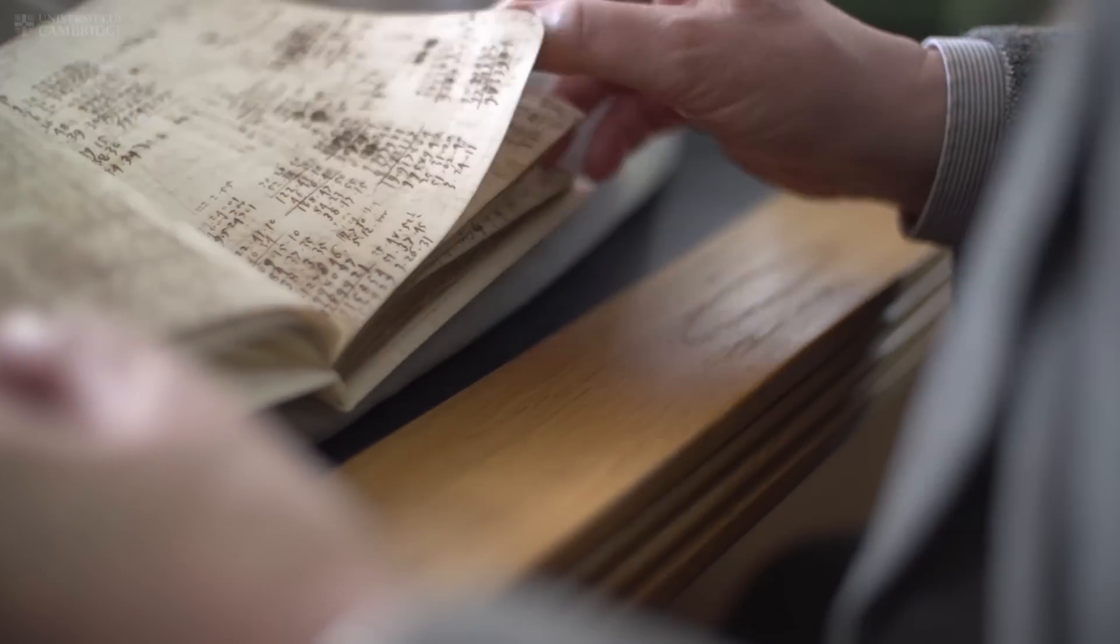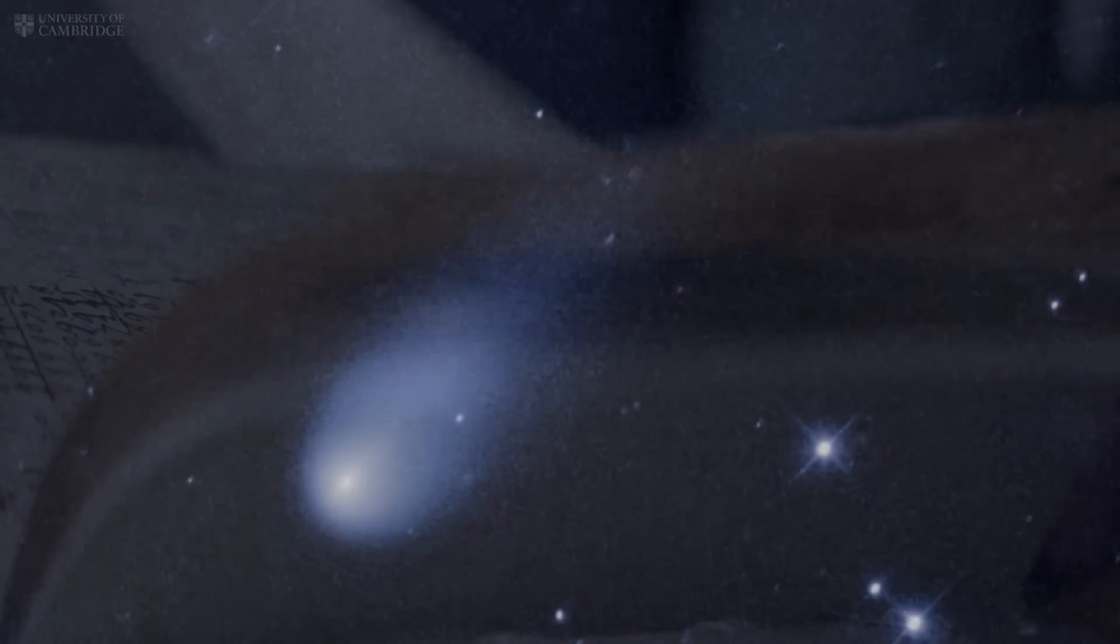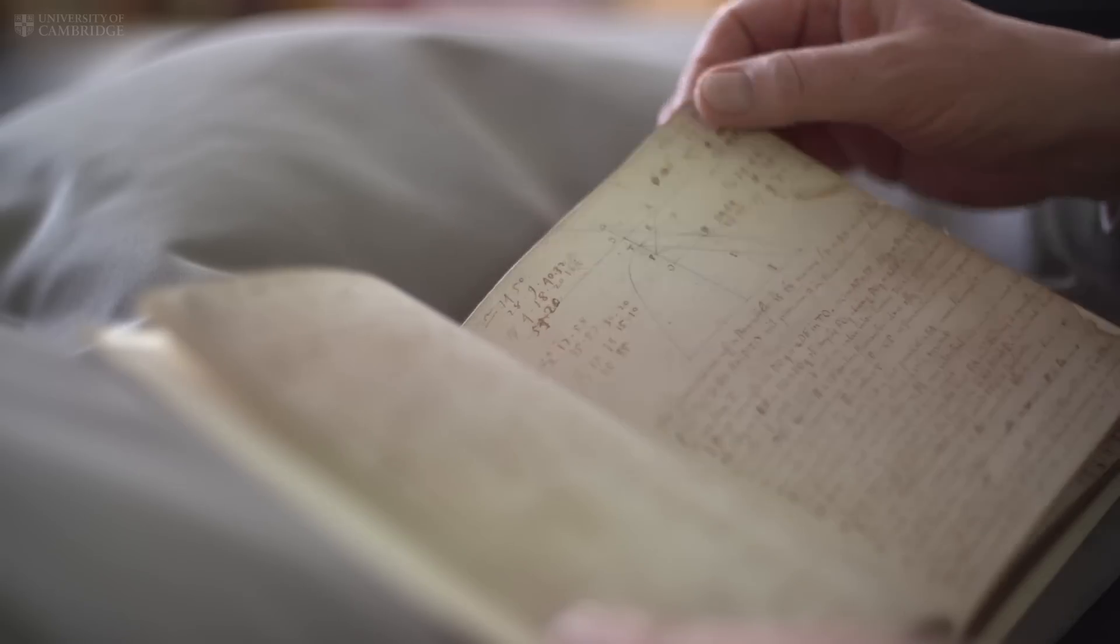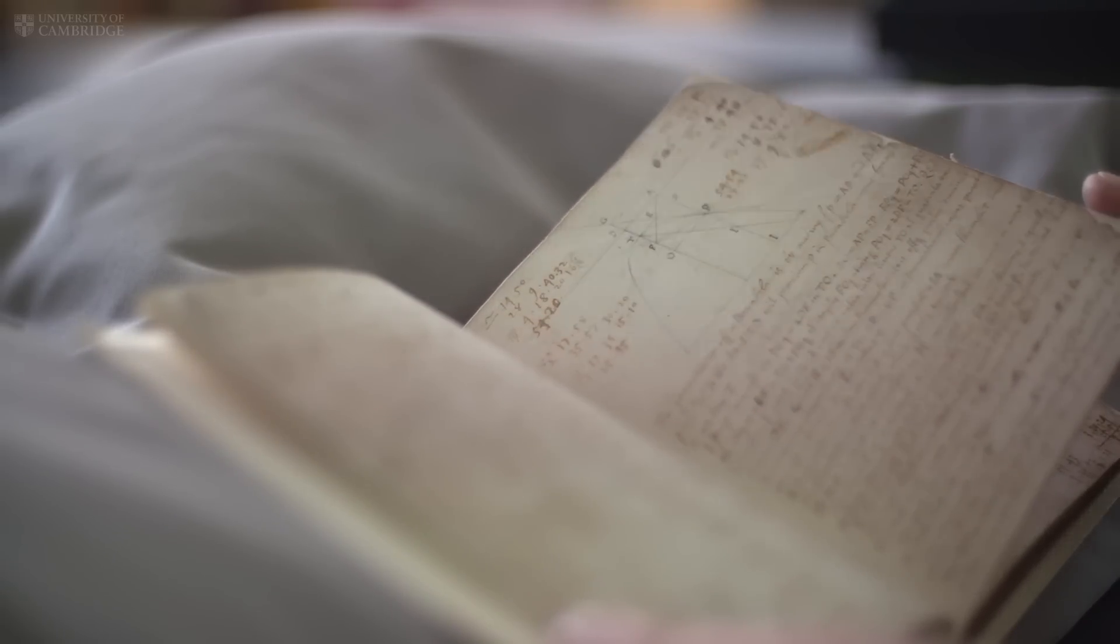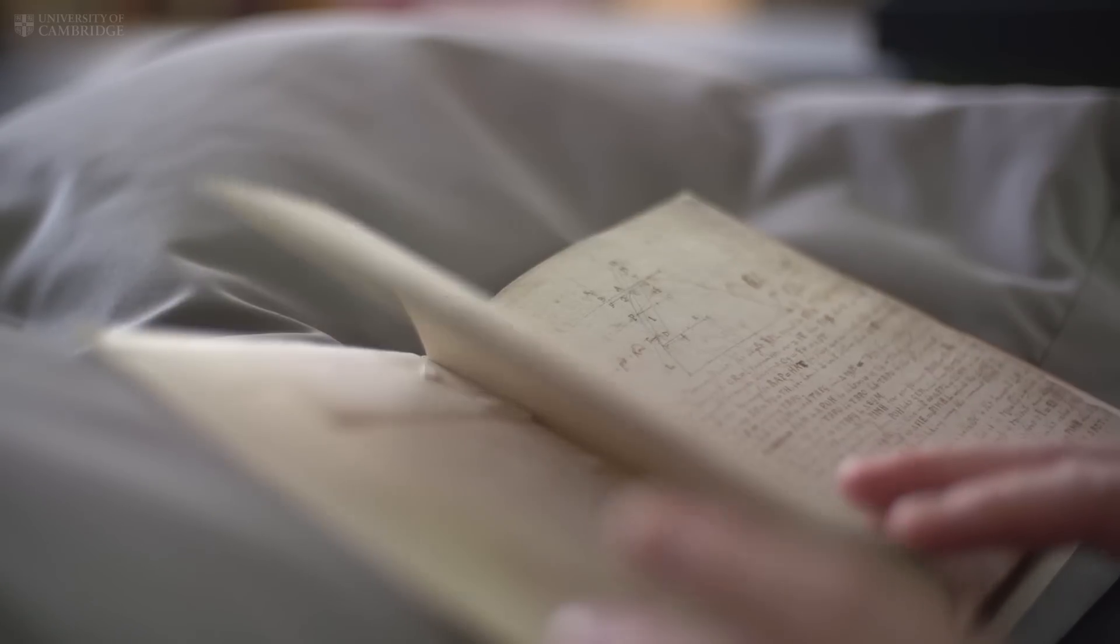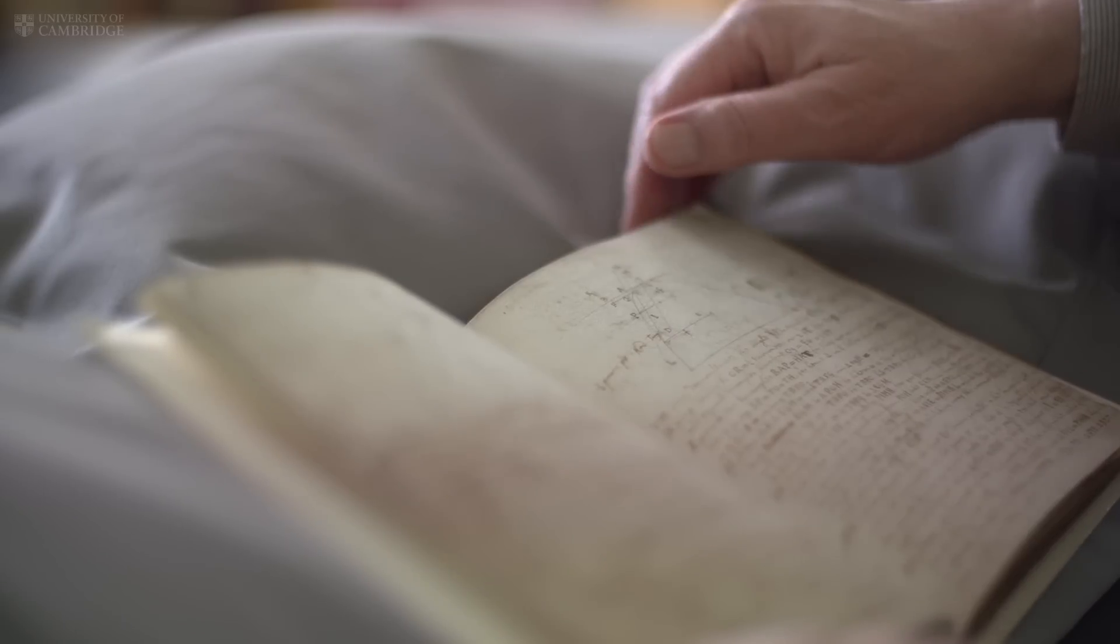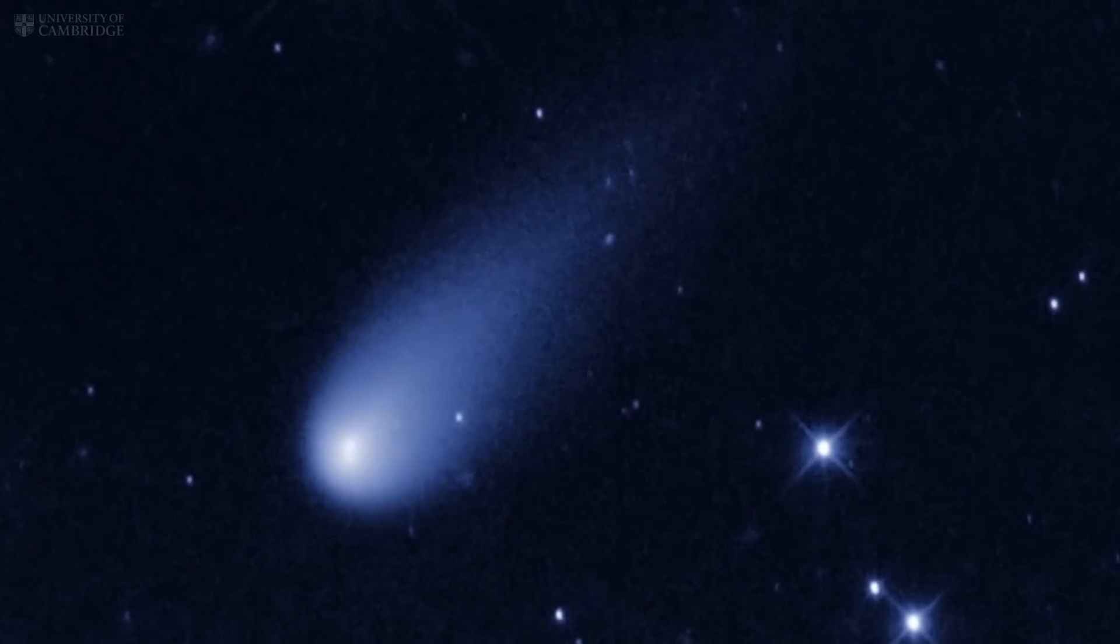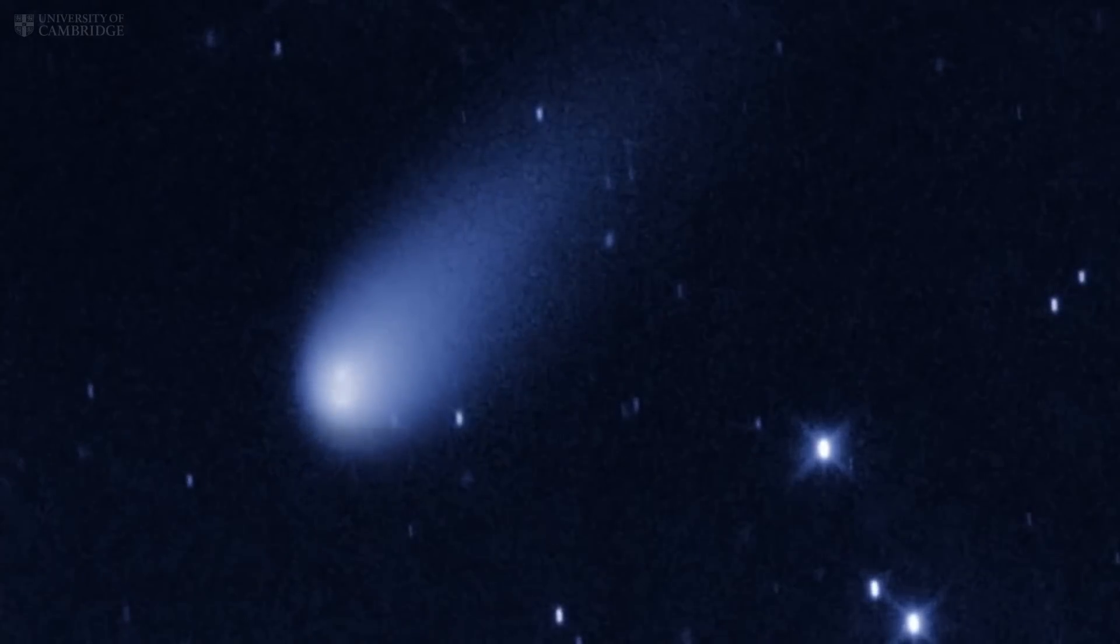This is Edmund Halley's manuscript notebook. He was famous today particularly for the comet that's named after him. Halley applied Newton's ideas in gravitation to the orbit of the comet of 1682. He predicted in 1758 that the comet would reappear. When it did reappear Halley was vindicated and a French mathematician suggested that it should be called Halley's Comet.